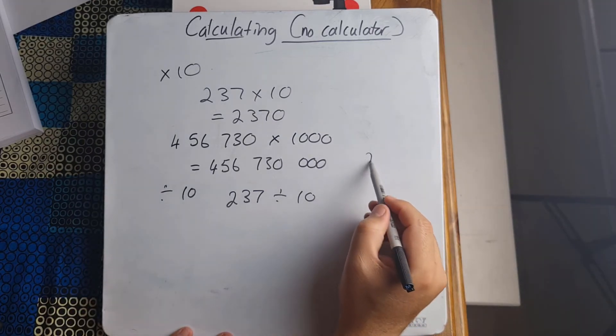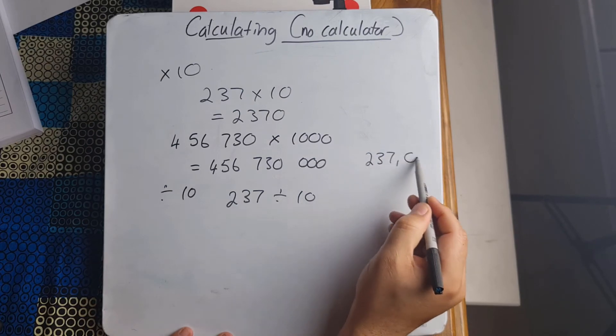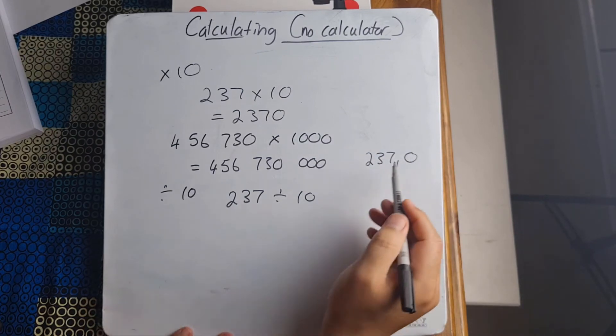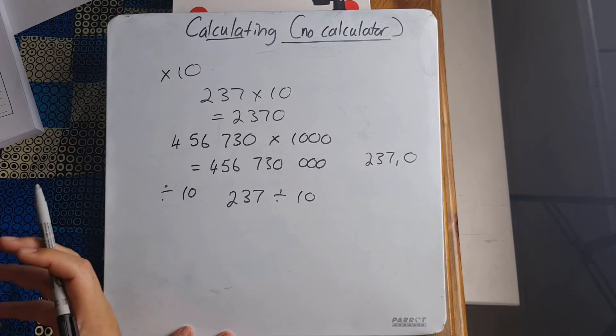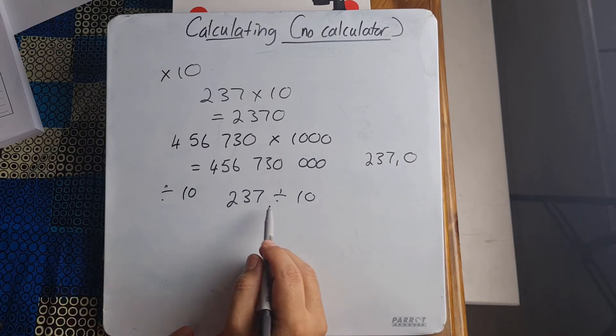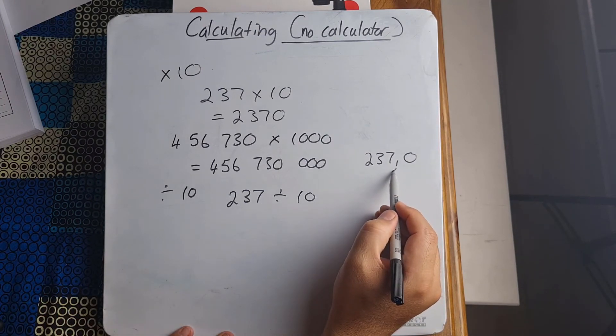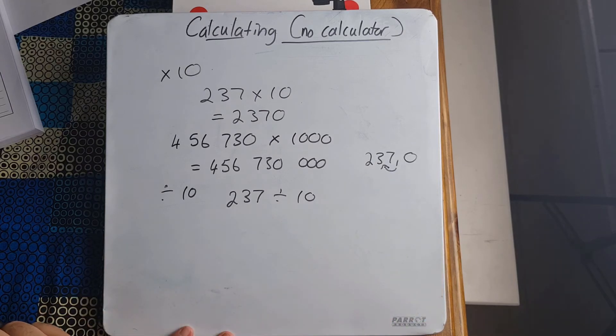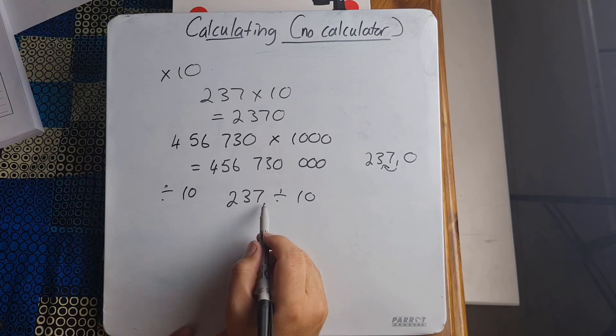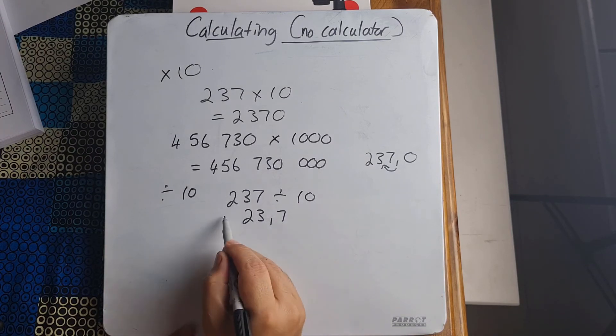237 is basically 237.0, but we don't show that because it's a whole number. When I divide by 10, I'm essentially taking that comma and I'm moving it one space forward. So now 237 divided by 10 becomes 23.7.